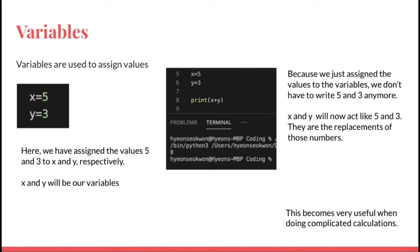Because we just assign the values to the variables, we don't have to write 5 and 3 every time anymore because x and y will now act like 5 and 3. So they are the replacements of those numbers.